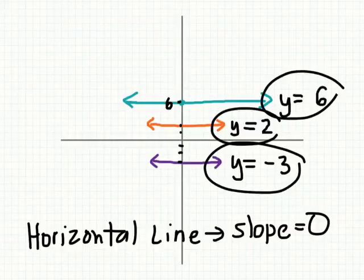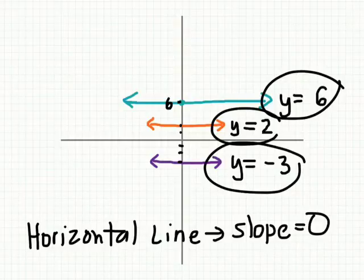So anytime you see an equation that just says y equals, you know it has to be horizontal, because there's no slope. The slope is zero.